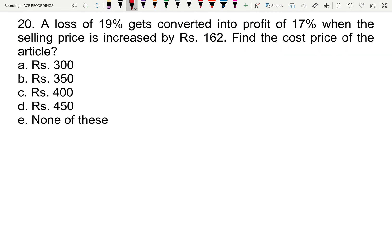For example, assume cost price equals to 100 rupees. First, at 19 percentage loss, the selling price would be 81 rupees. Next time, at 17 percentage profit, the selling price would be 117 rupees.